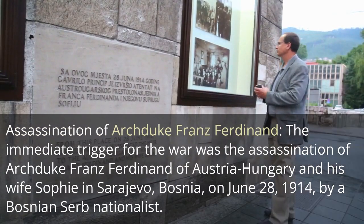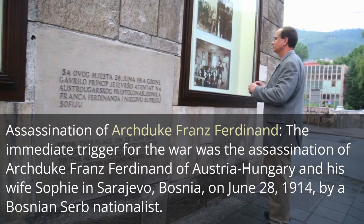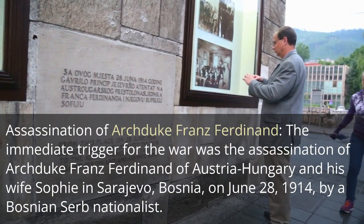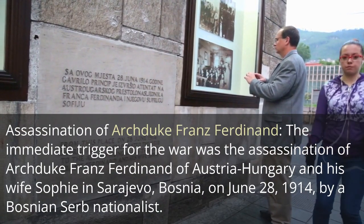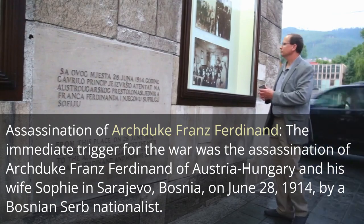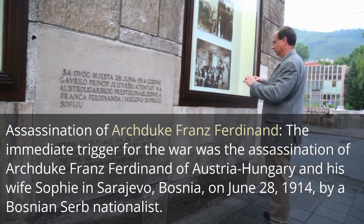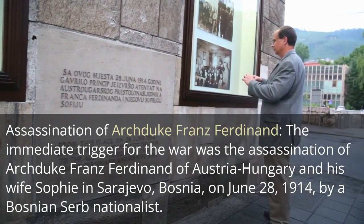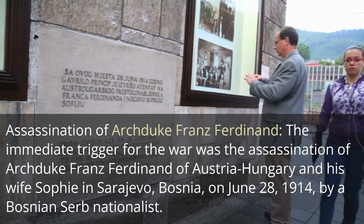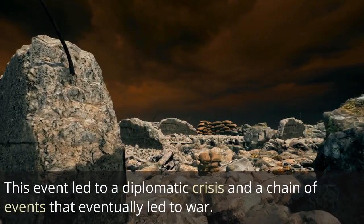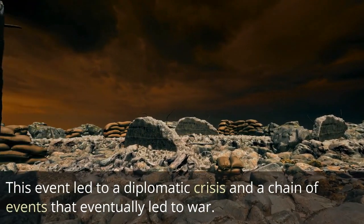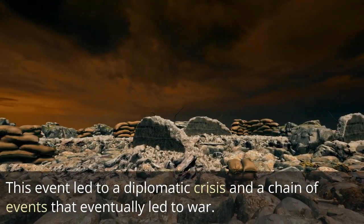Assassination of Archduke Franz Ferdinand. The immediate trigger for the war was the assassination of Archduke Franz Ferdinand of Austria-Hungary and his wife Sophie in Sarajevo, Bosnia, on June 28, 1914, by a Bosnian Serb nationalist. This event led to a diplomatic crisis and a chain of events that eventually led to war.